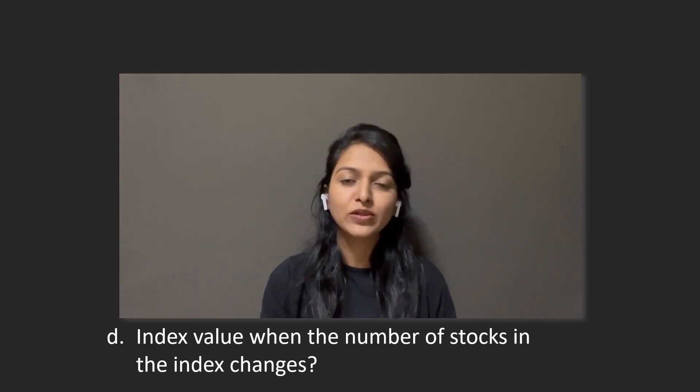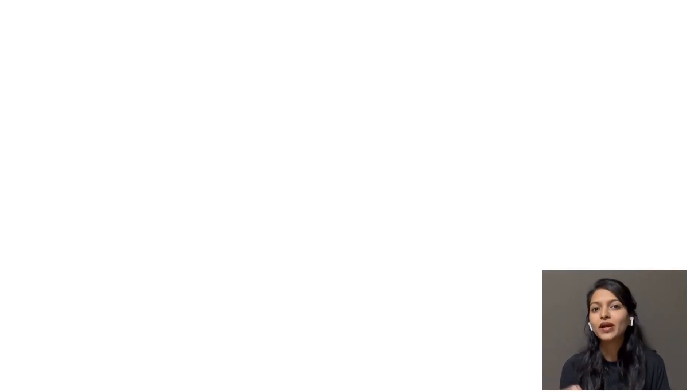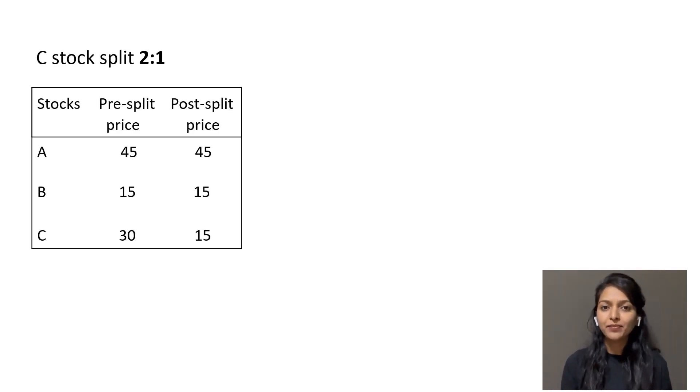Next we need to see how changes in the number of stocks influence the index value. Assume that stock C went for a stock split in a 2 for 1 ratio. The updated numbers are: for stocks A and B prices remain the same. For stock C, its price before the split was 30 and after the split it goes down to 15.